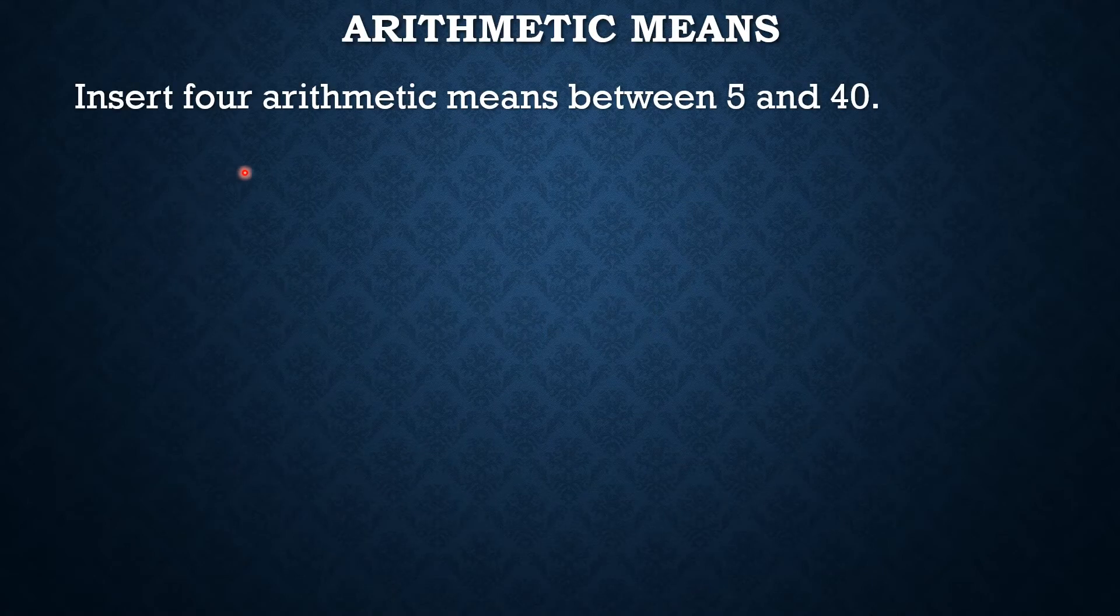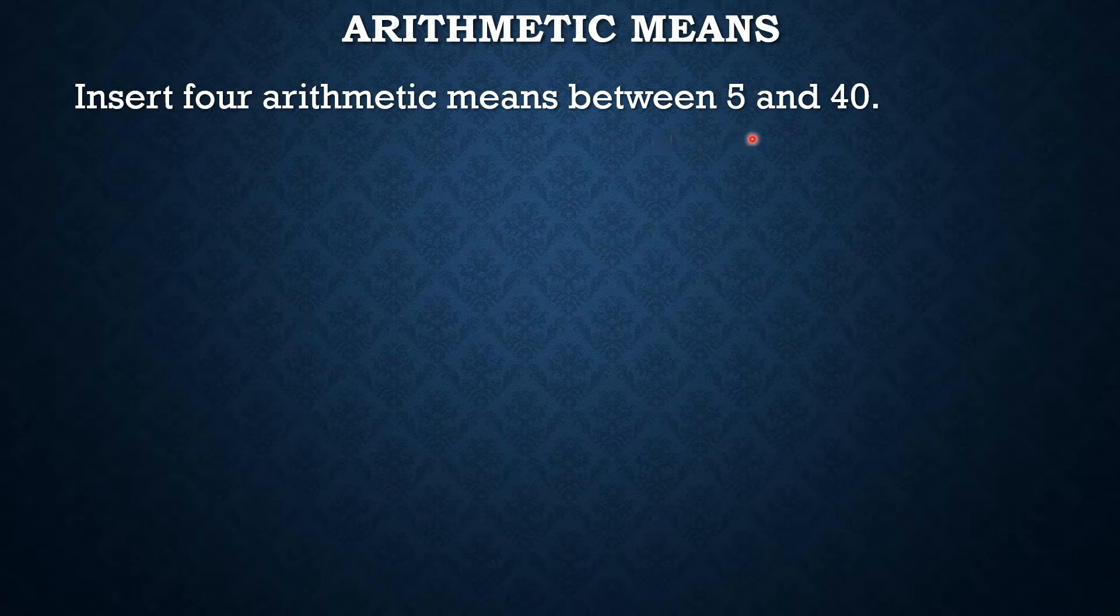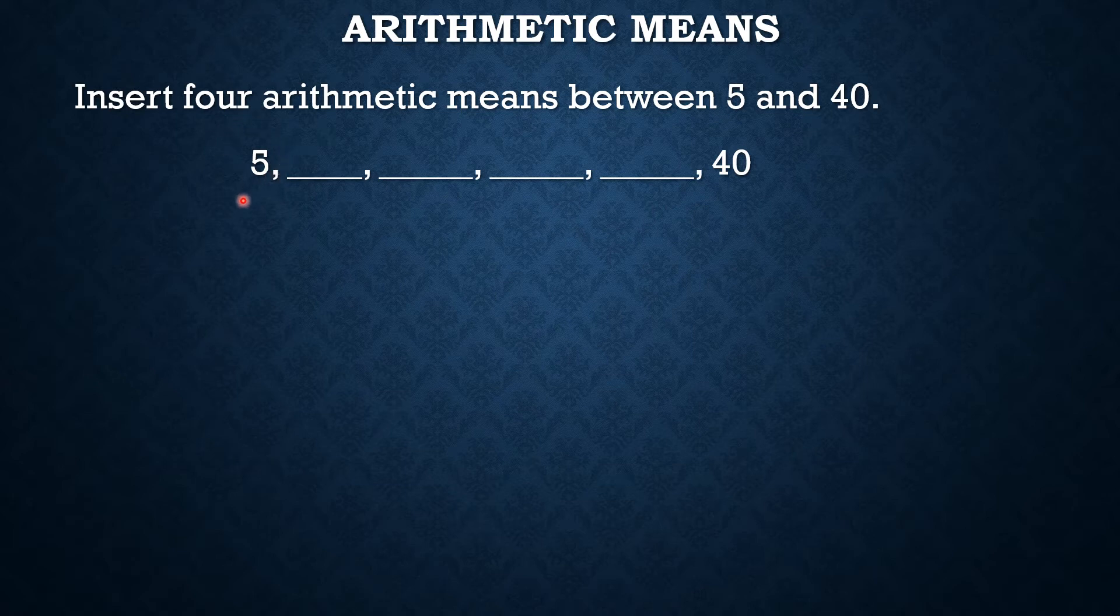For example, insert 4 arithmetic means between 5 and 40. So in this case, para mas ma-visualize natin kung ilang terms ba yung meron tayo sa ating sequence, we can use this. So in this case, ito yung 5 at merong 4 arithmetic means sa pagitan nila. So 1, 2, 3, 4.